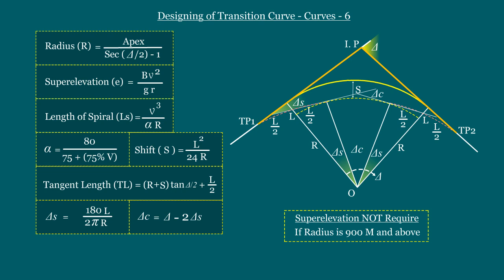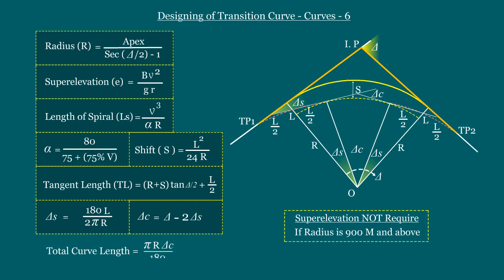The ninth step is finding the total curve length. We already know the length of the spiral curve at both sides. Now we will calculate the length of the circular curve lc using the value of delta c. The formula for any curve length equals π·r; to find the curve length for this segment, multiply by delta c/180. So lc = π·r·delta_c/180. To find the total curve length, add the length of spiral curves at both sides: total curve length = π·r·delta_c/180 + 2·ls.